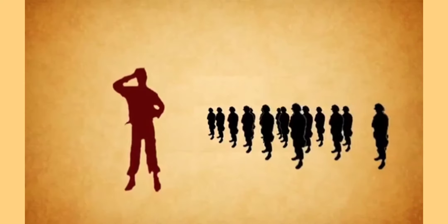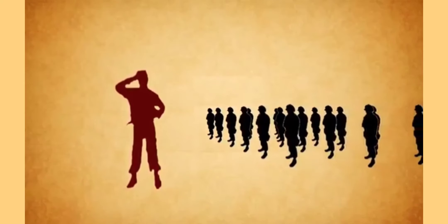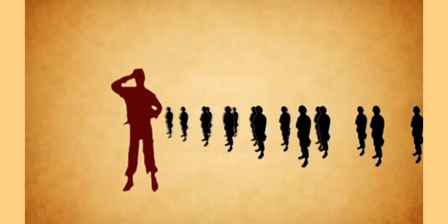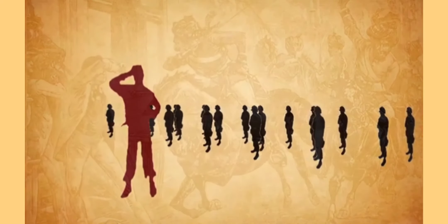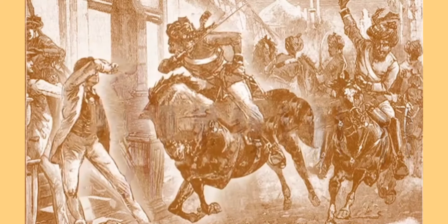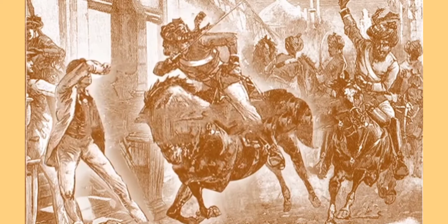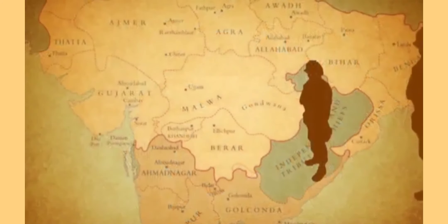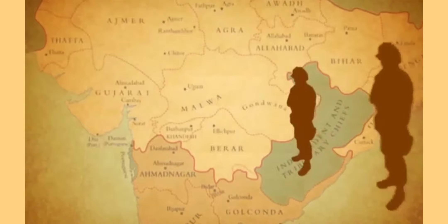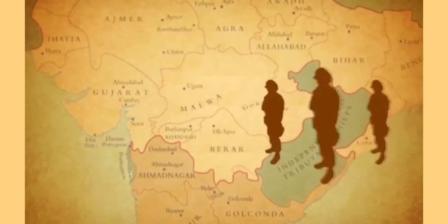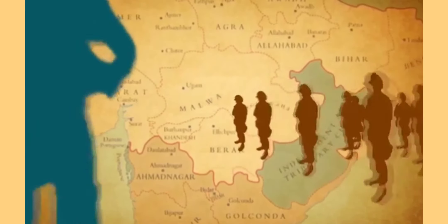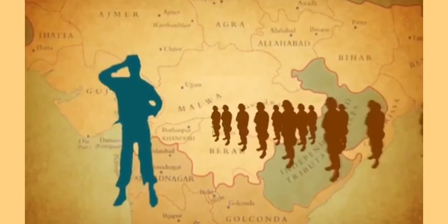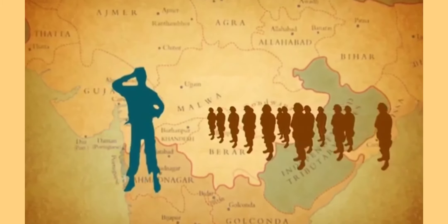Many princely groups, such as the chiefs of Nabha, Patiala, Karnal, and Jind, the Holkars, and the Scindias, as well as the Rajput rulers, remained loyal to the British. The intellectual class did not participate or sympathize with the rebels. The rebels were poorly organized and did not have plans to replace the British institutions of government. The absence of a unifying ideology also did not help their cause.